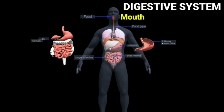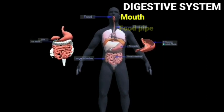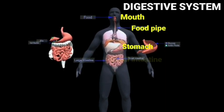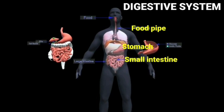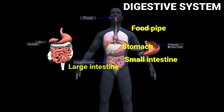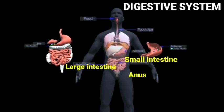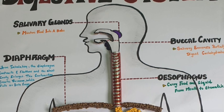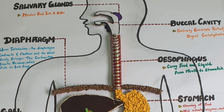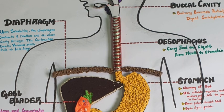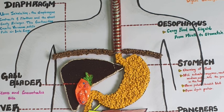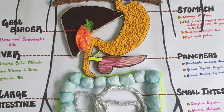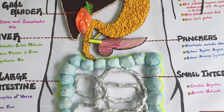The mouth, food pipe, stomach, small intestine, large intestine, and anus form the digestive system. The human digestive system is composed of an alimentary canal and associated glands.